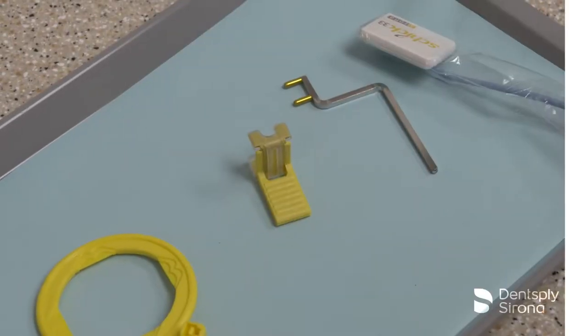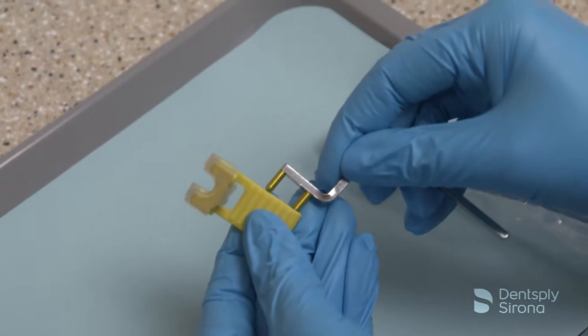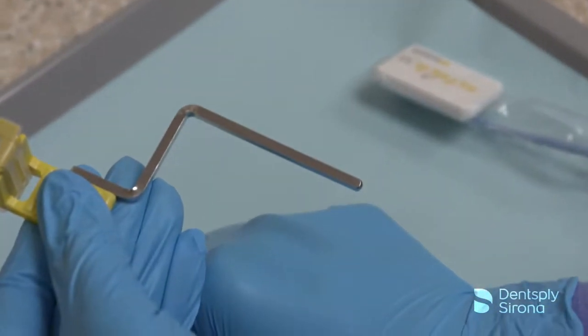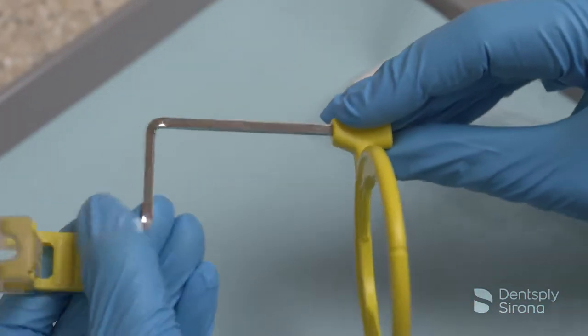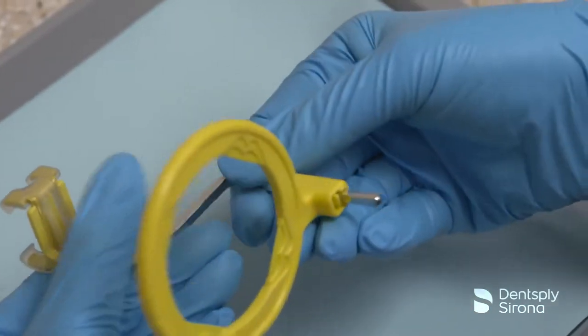To assemble the XCP short arm with XCP DS-FIT posterior bite block, place the yellow pins on the arm into the side of the yellow bite block and slide the arm into the yellow end on the aiming ring.